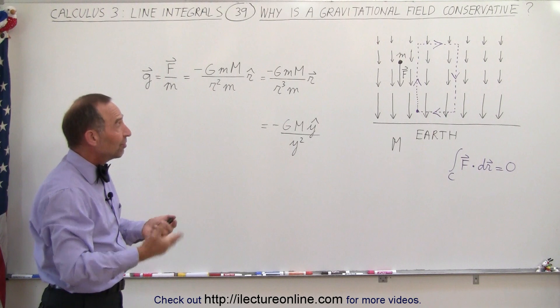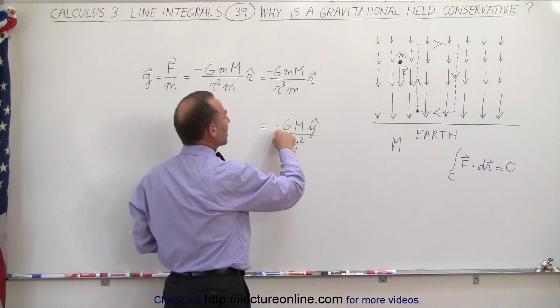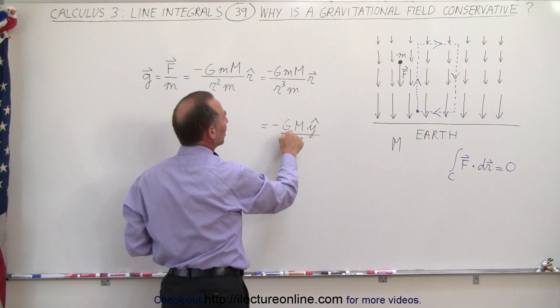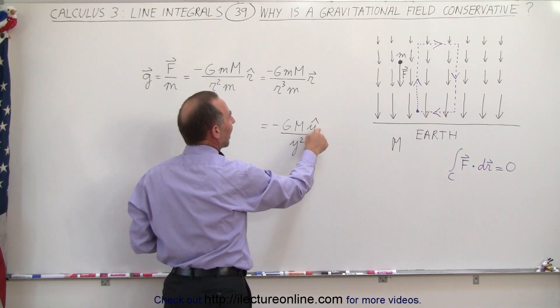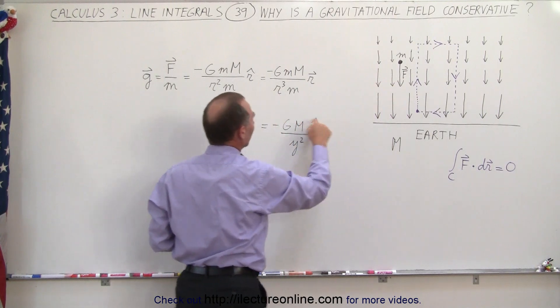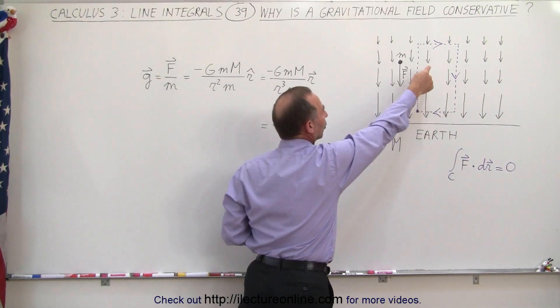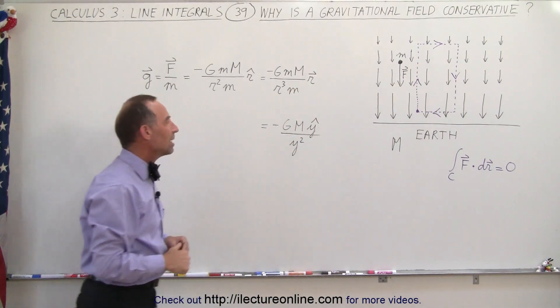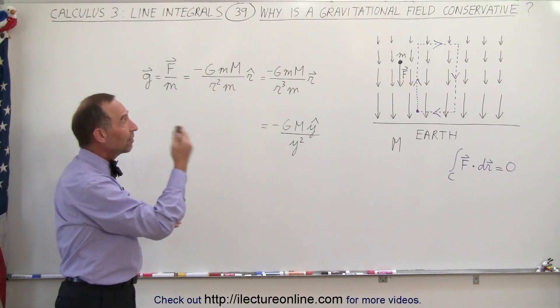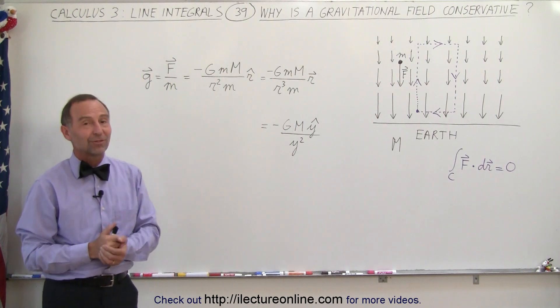If we simply want to think of it in terms of the y direction, we could say that we have negative G times M, because the small m's cancel, times the direction in the y direction—in this case the negative y direction—divided by the distance between the center of mass of the earth and the location that we want to check the magnitude of the field. That's why we now know that gravitational fields are indeed conservative fields, and that's how it's done.